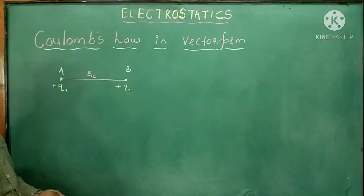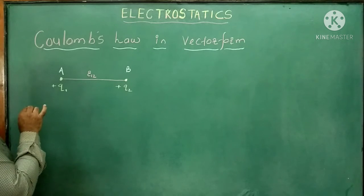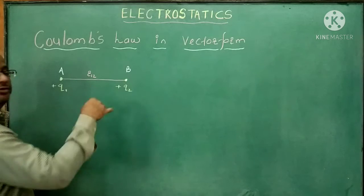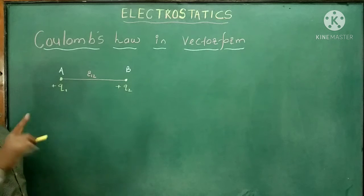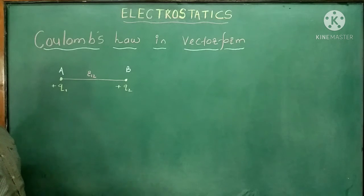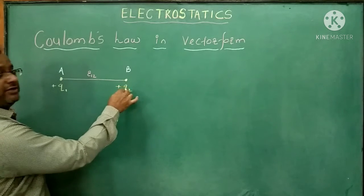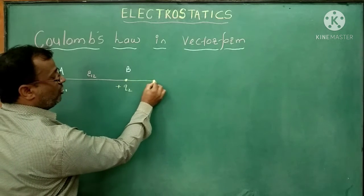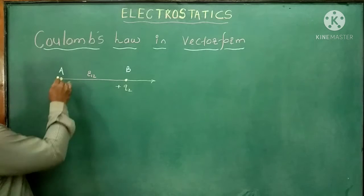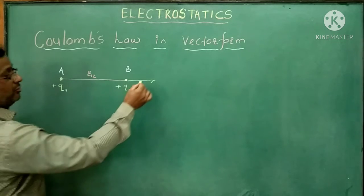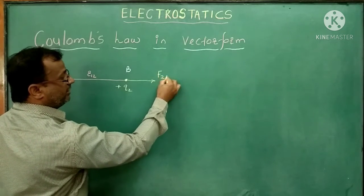The first electrical charge Q1 exerts a force on the second electrical charge Q2. Since both charges are like charges — positive and positive — when Q1 exerts a force on Q2, the direction of that force is outward, along the direction AB. This force is denoted F21.